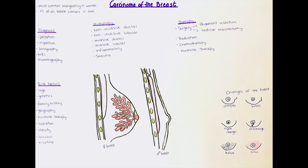Another risk factor is ionizing radiation. Previous radiation therapies in the thorax area can increase the risk of developing breast cancer significantly. Also, the radiation used for mammography increases the risk of developing a carcinoma of the breast, however the benefit of detecting a possible carcinoma early outweighs the risk increase. Other risk factors include obesity, alcohol consumption, a diet rich in fat, as well as nicotine usage.